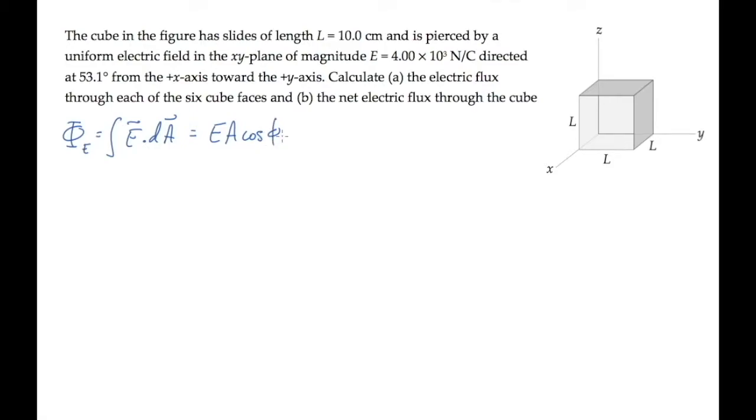This gives us E times A times cosine of the angle phi between those two vectors. We're given the magnitudes of the electric field and the area of each cube face, but we need to find the angle phi between each normal and the electric field.